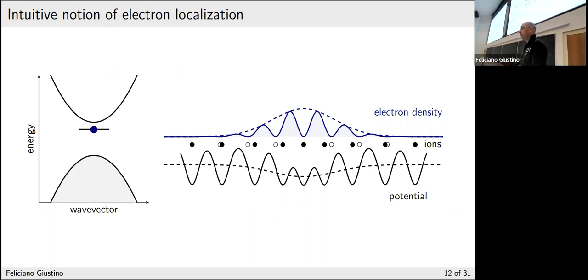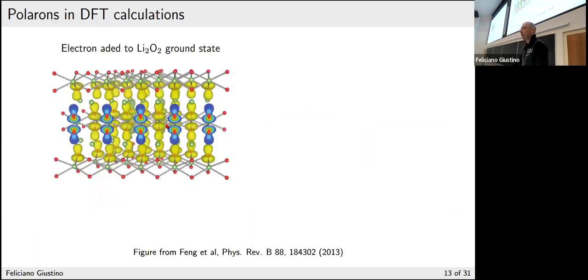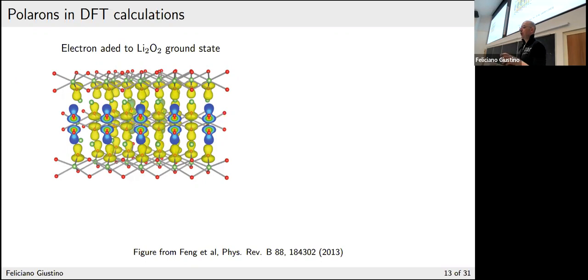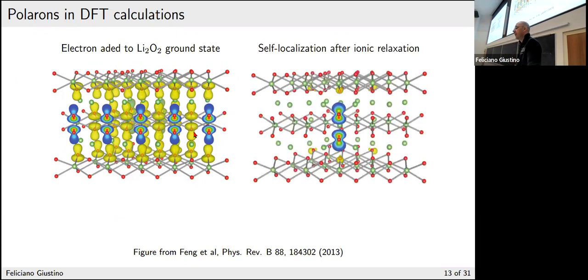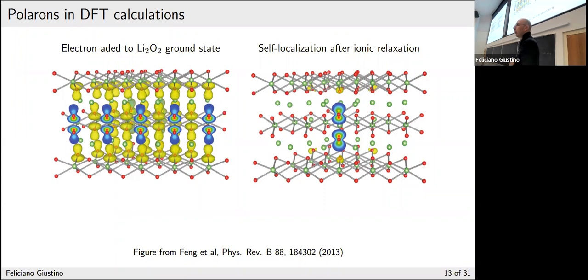In principle, if you want to ask whether there is a polaron in titanium dioxide, you take a supercell, add an electron, and see what happens. That's exactly what people have been doing. Here is an example for lithium peroxide — an oxide used in battery applications. If you have an electron and keep the atoms in their equilibrium positions, the electron is completely delocalized. But if you distort the atoms in some region and then relax the electron and let everything go to find the minimum, you find localization of the wave function around some place. Notice there are no crystal defects — in the pristine crystal there is just another solution that is not delocalized but localized. This is what people had in mind when talking about polarons many years ago.